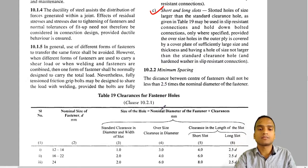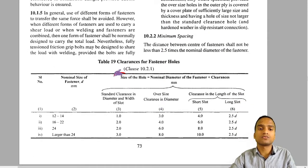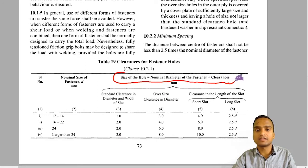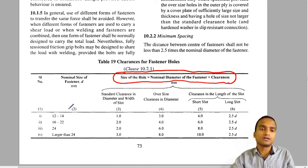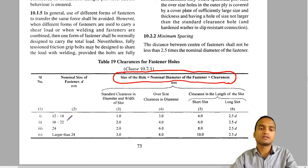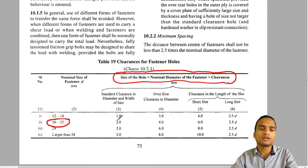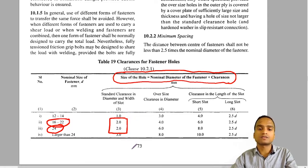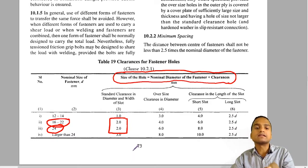The size of a hole equals the nominal diameter of the fastener plus clearance. Fastener means bolt. If the nominal size of the fastener is 12–14 mm, clearance is 1 mm (standard type). For general cases — M16, M18, M20, M22, M24 bolts — clearance is 2 mm, so the hole diameter equals the nominal bolt diameter plus 2 mm. For oversize holes, clearance is generally 4 mm, all listed in Table 19 of IS 800.